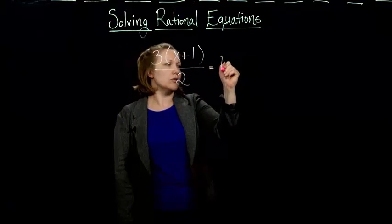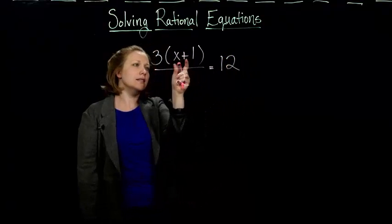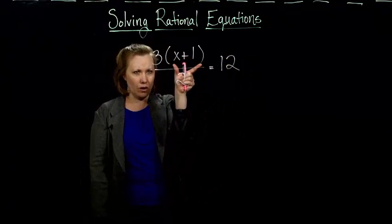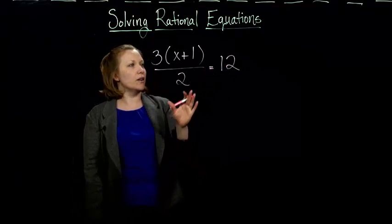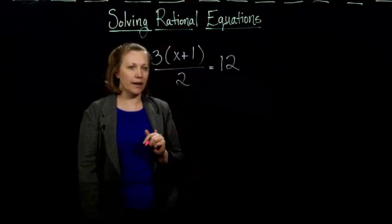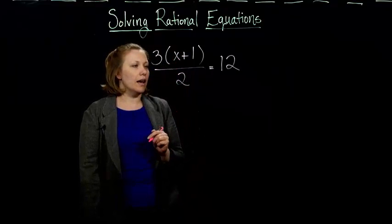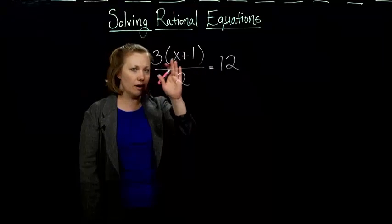Equals 12. So I've got 3 times the quantity of x plus 1 all over 2 equals 12. And so my goal is still to get 1x by itself on one side. And this is a rational equation because I've got a fraction here.